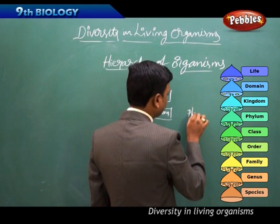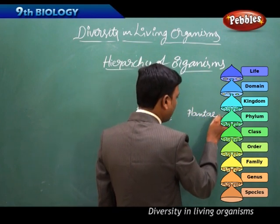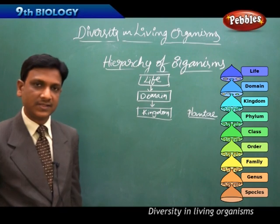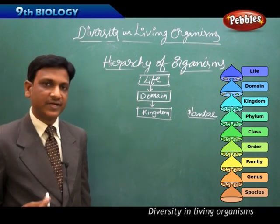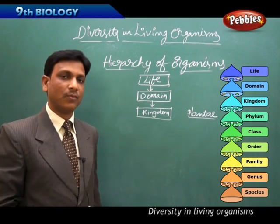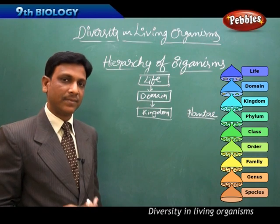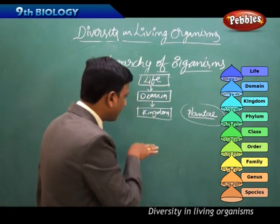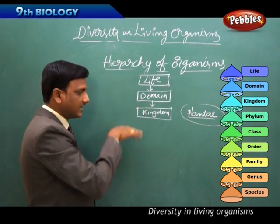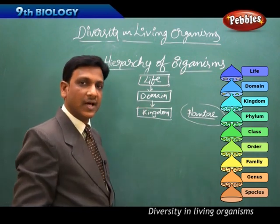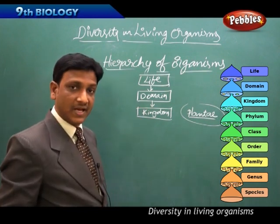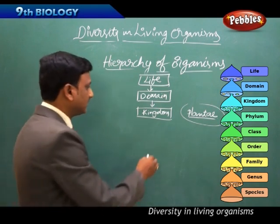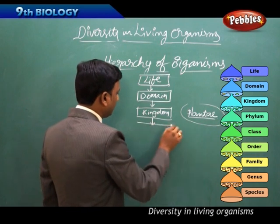For example, plant kingdom. If you take plant kingdom, under it there are so many plants. There is a lot of variation. The differences are more among the plants when compared to the similarities. So in the hierarchy, the higher categories will have more number of organisms, more differences, and less similarities.